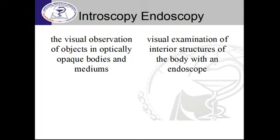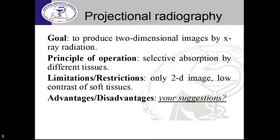In endoscopy, we can see with our own eyes what happens inside the patient's body using a device that brings information from the inner side to the outer side. Introscopy is different — we use options other than visible light, but we ultimately turn the data into a visible image, because the doctor is a human being. Introscopy relies on different sources of electromagnetic waves like X-rays, gamma rays, and other options.